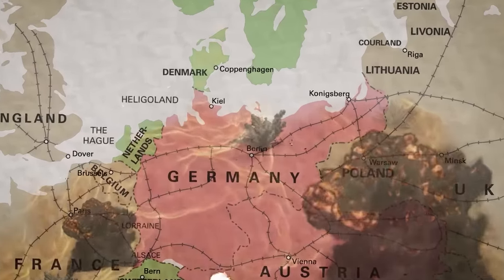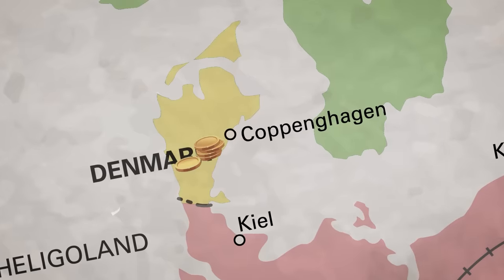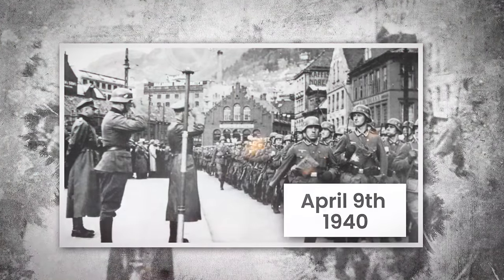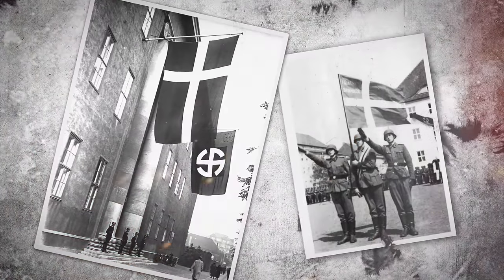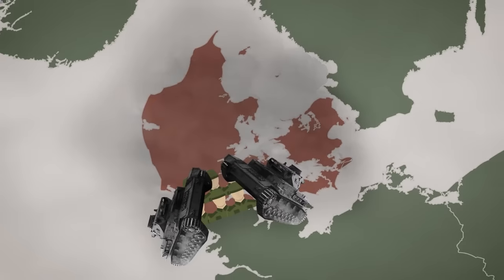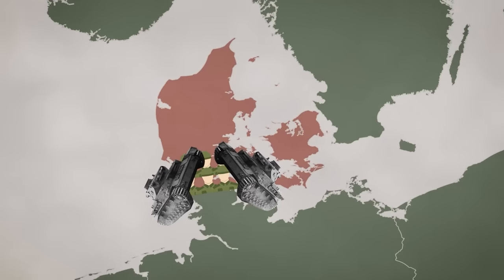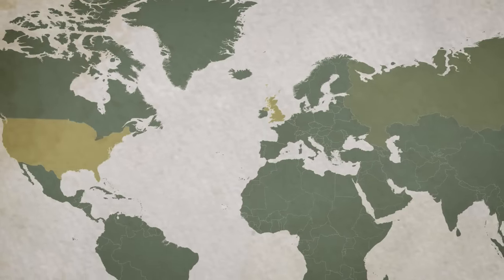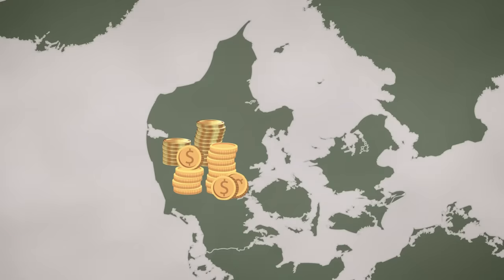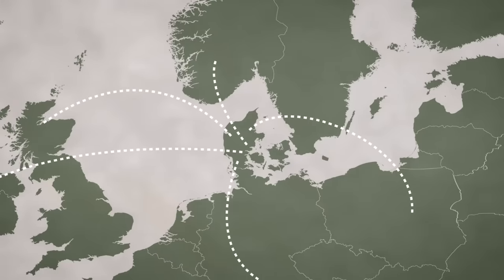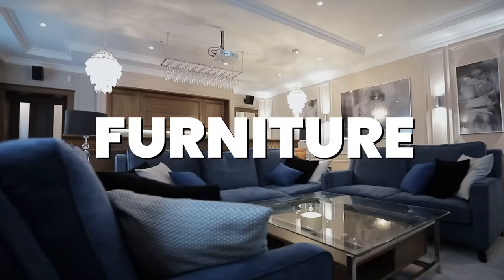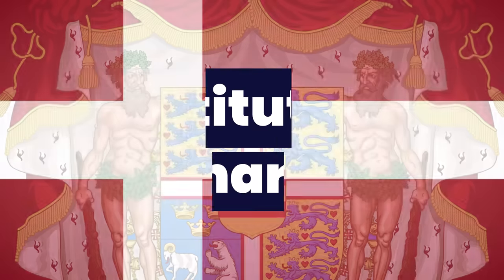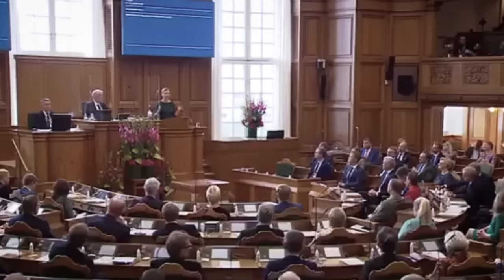In World War I, Denmark remained neutral, and after the war their economy started to evolve — until April 9, 1940, when the neutral Denmark was invaded by German troops. Overwhelmed by the German war machine, the country was occupied for five years under the Nazis. On May 5, 1945, Denmark was freed from German occupation, thanks to the Grand Alliance consisting of the UK, US, and the Soviet Union. Denmark's economy flourished again, with increased exports of design goods, furniture, bacon, and butter. Today, Denmark is a constitutional monarchy ruled by a representative democracy and a strong defender of free trade and human rights.